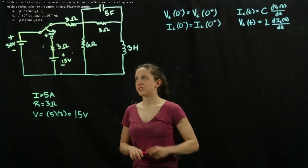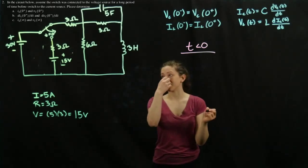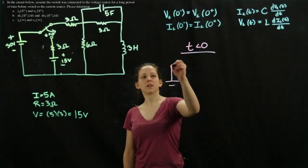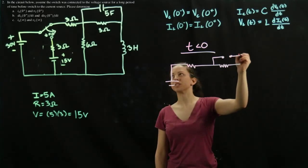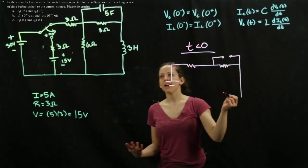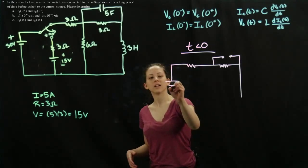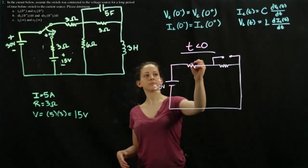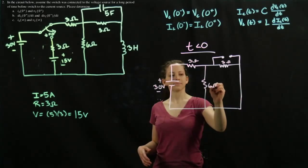Now we're going to start with the T less than zero circuit. For the T less than zero circuit, the switch is in its current position. This capacitor is an open circuit because it's in steady state, so no current is flowing across it. Likewise, this inductor is a short circuit because it is also in steady state, so there's no voltage drop across it. Then we have the 30 volts and the 6 ohms.